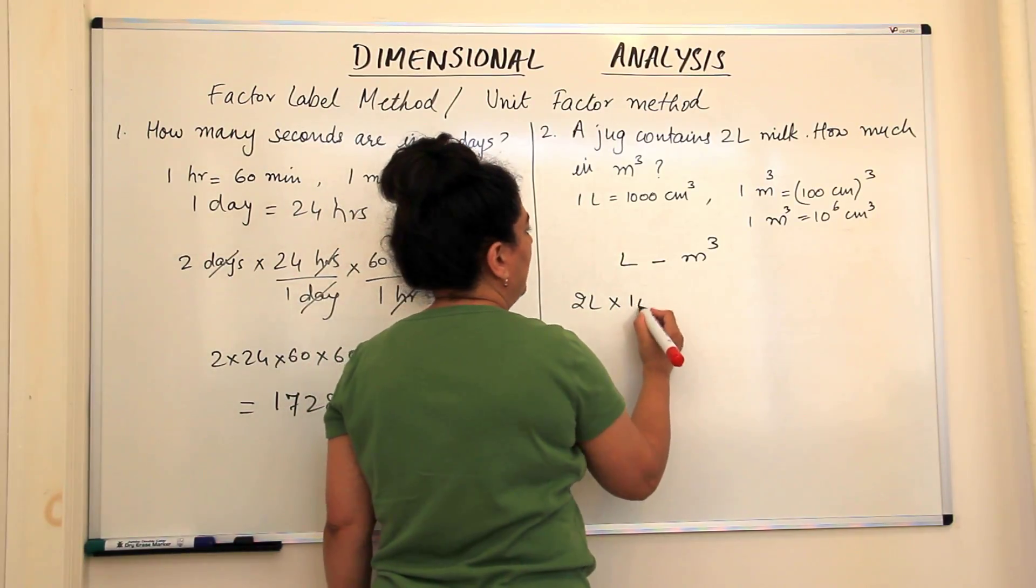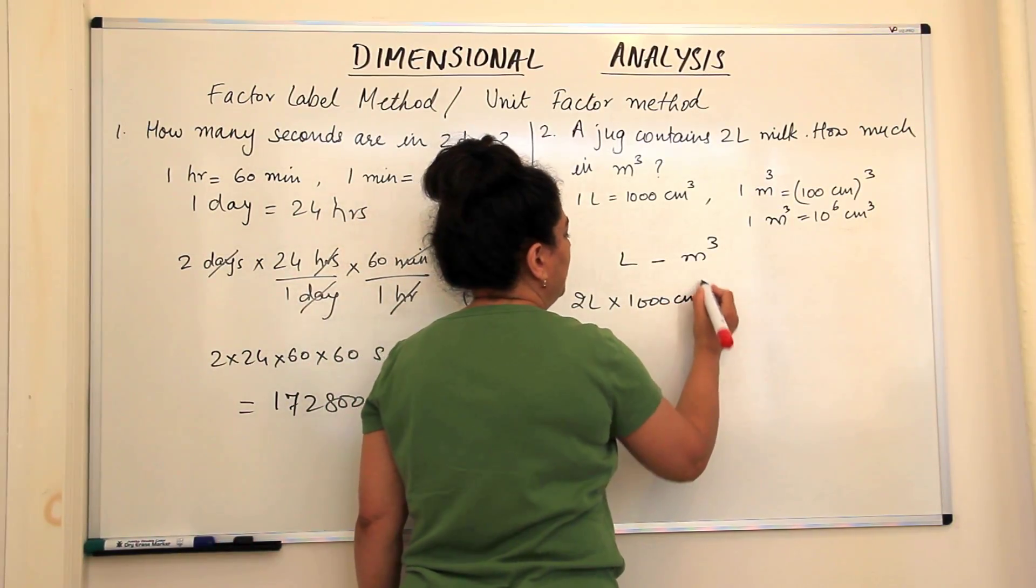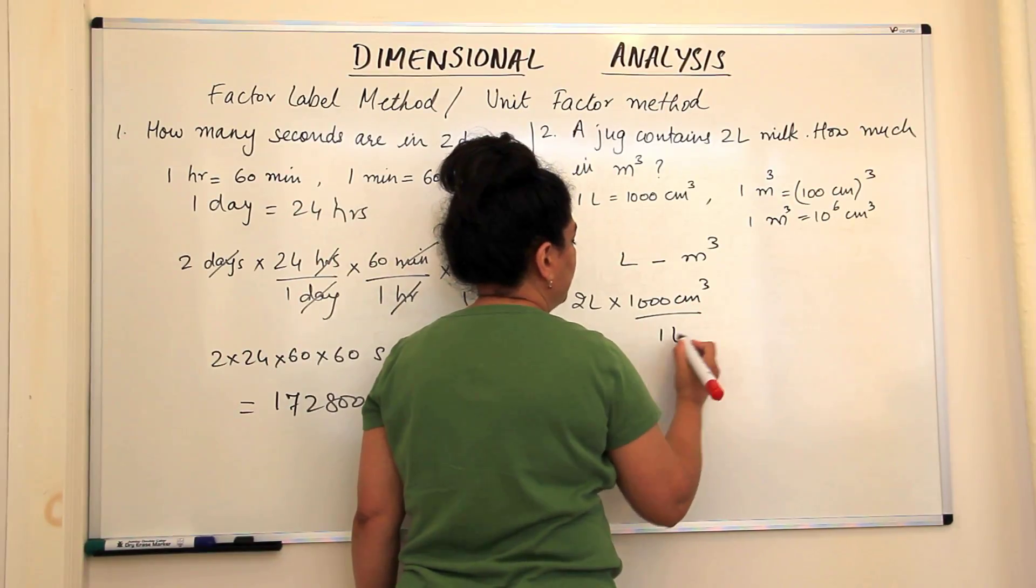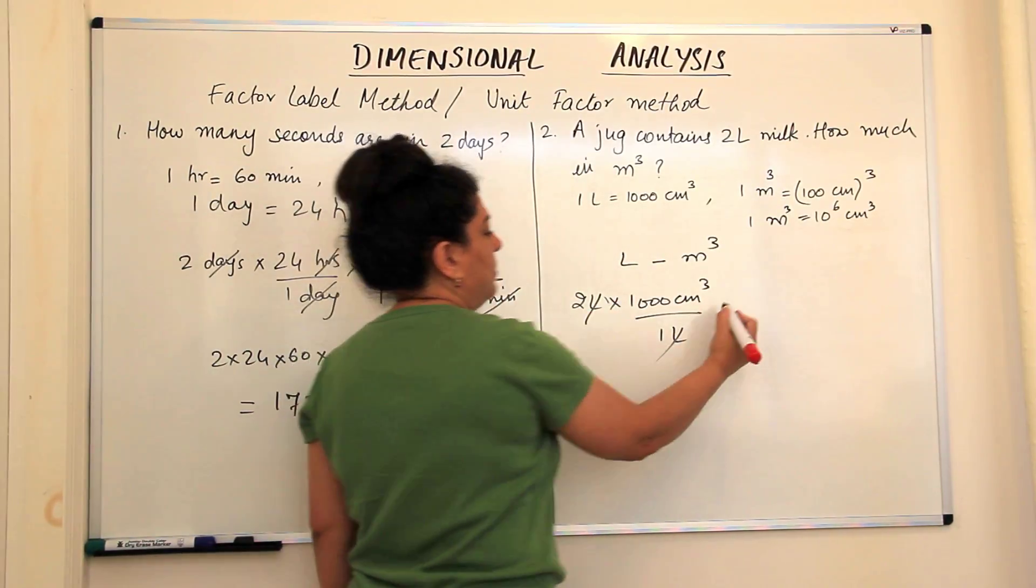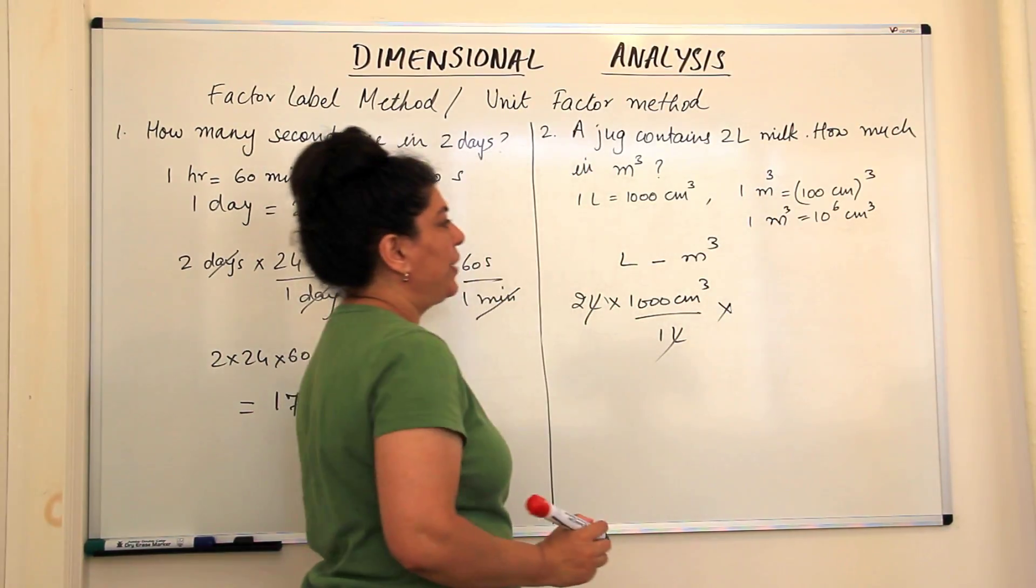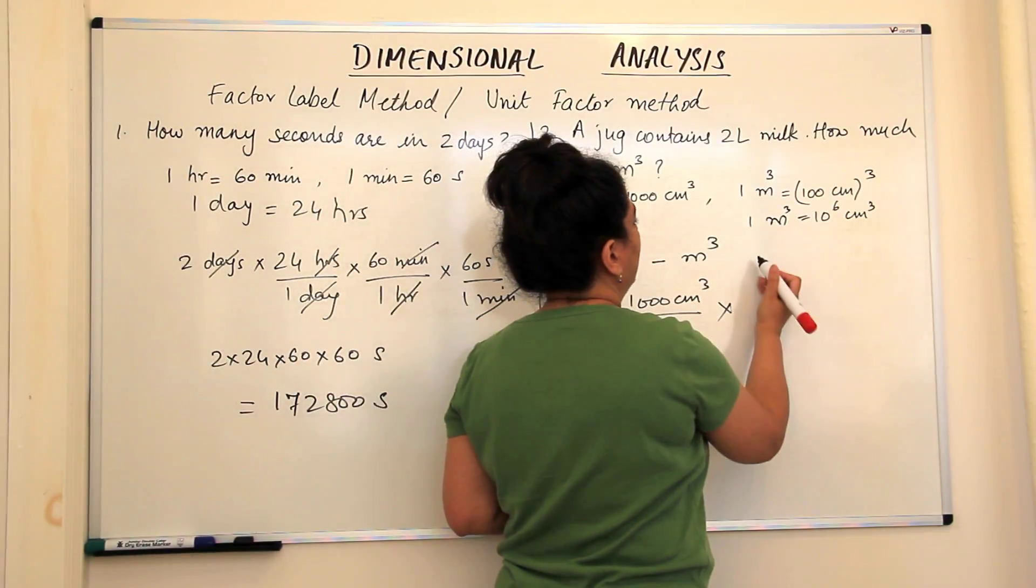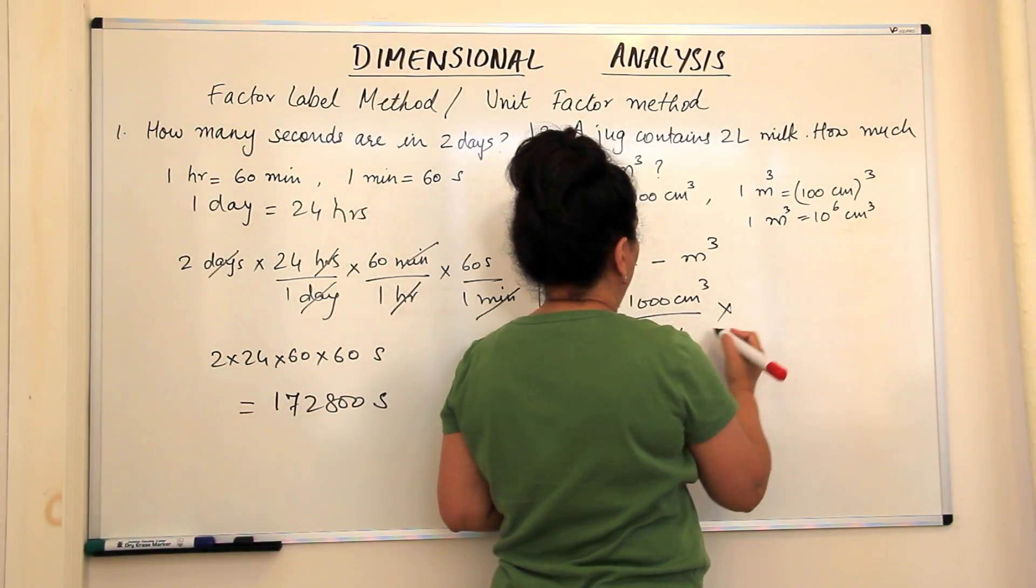The litres should come in the denominator. So 2 litres into 1000 centimetre cube upon 1 litre. The litre gets cancelled out.